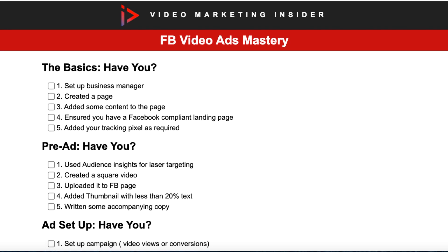Every time I make a how-to video, for example, I try to create a congruent lead magnet. So if somebody comes to YouTube or Google and types in 'how to create Facebook video ads' and they see my video, I would encourage them at different points throughout the video to click on the link to get my Facebook video ads checklist. It's congruent with the content they are consuming, which means the opt-in rate is much higher than if it was a generic lead magnet.